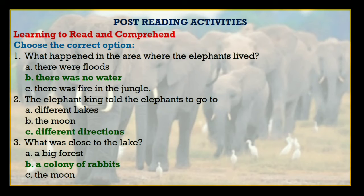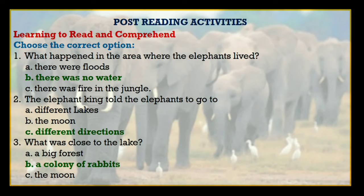Next: the elephant king told the elephants to go to — options are: different lakes, the moon, different directions. The answer is: different directions. The elephant king told the elephants to go to different directions. Next: what was close to the lake? Options are: a big forest, a colony of rabbits, the moon. The answer is: a colony of rabbits was close to the lake.